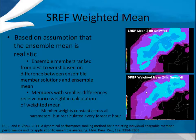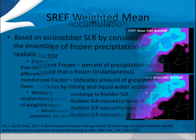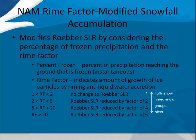Basically, the smaller the differences are given a much higher weight, as opposed to a solution that may be on the fringe. The RIME factor looks at percent frozen precipitation reaching the ground, and also partly uses the Rohrer technique. Lower values indicate fluffy snow, and very high values of the Rohrer technique indicate frozen precipitation such as sleet.